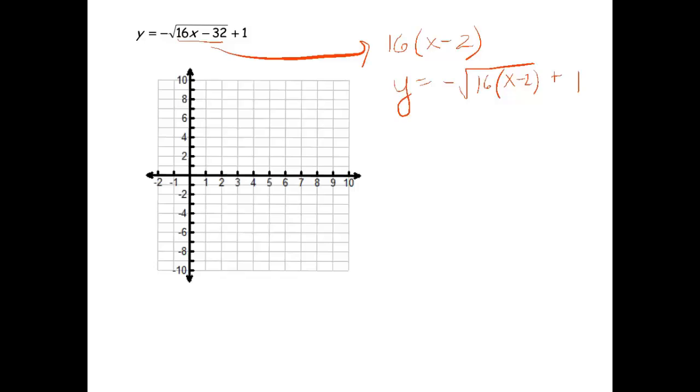Now remember, we can now split up this radical into the negative square root of 16 times the square root of x minus 2 plus 1. And we know what the square root of 16 is, so now this becomes negative 4, the square root of x minus 2, and then plus 1 on the outside there. So now we have a function that looks more familiar to us.